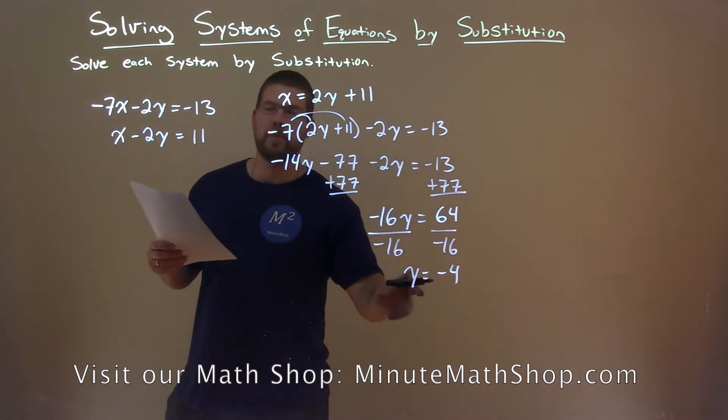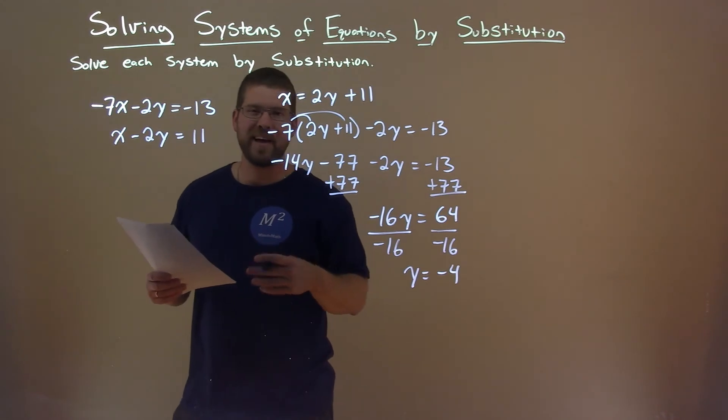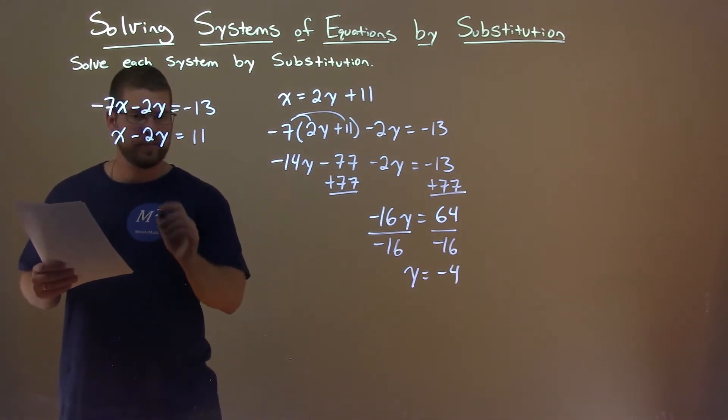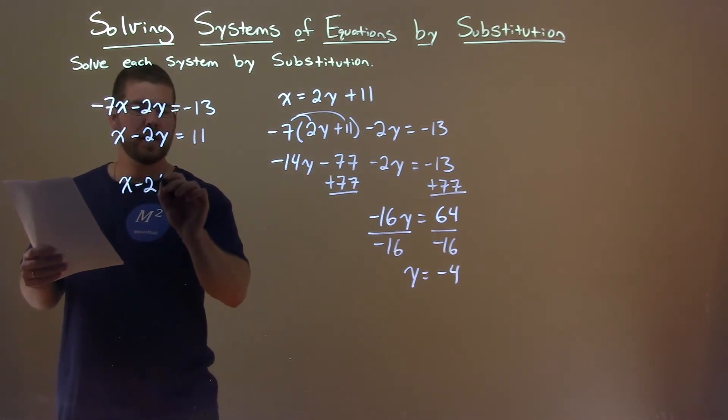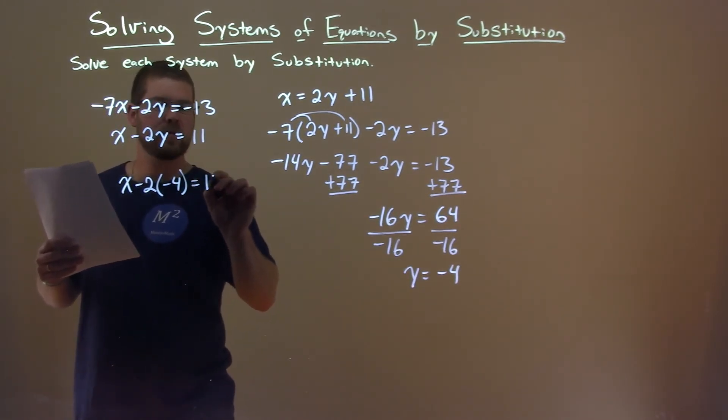We then have to take that information and plug it into one of our first two equations to solve for x. I think the second equation is easier: x minus 2 times negative 4 equals 11.